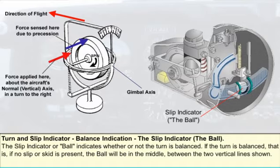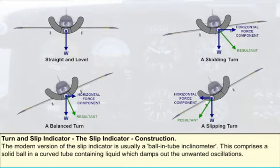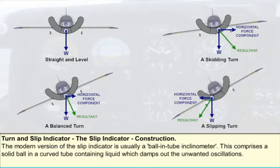The slip indicator gives a direct indication of the state of balance of the turn. Early types of slip indicator employed a simple metal pendulum suspended in the instrument case, its oscillations controlled by a piston-in-cylinder damping device. The modern version, a sketch of which is shown here, is usually a ball-in-tube inclinometer — a solid ball in a curved tube containing liquid, which damps out unwanted oscillations.